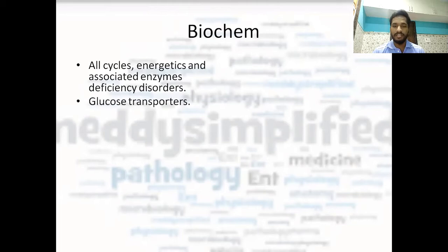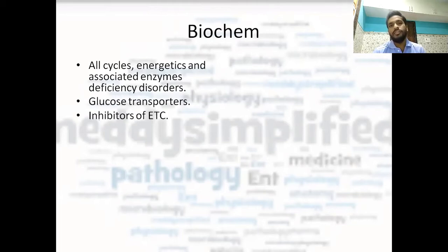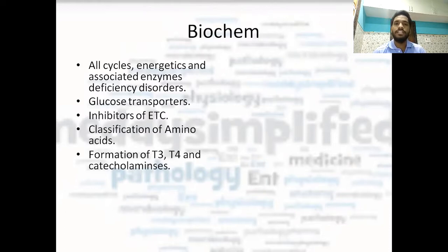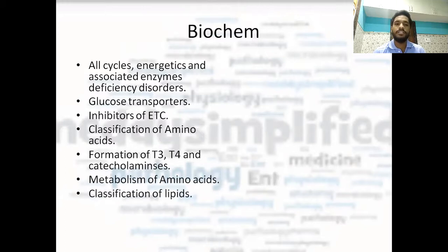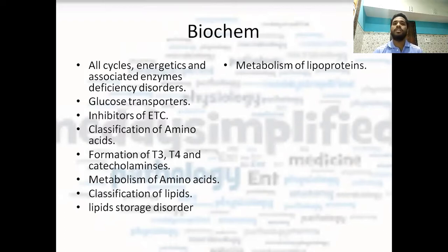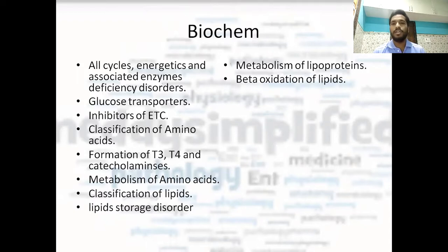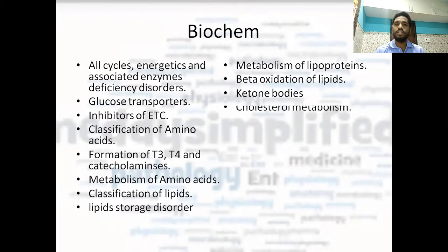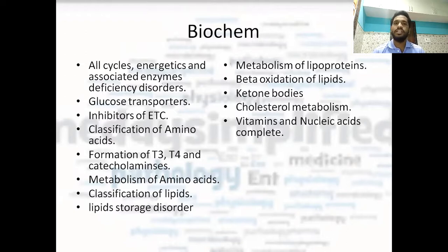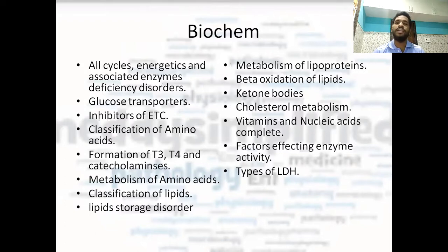Now talking about biochemistry. All the metabolic cycles and their energetics are important. Glucose transporters, inhibitors of the electron transport chain, classification of amino acids, formation of T3, T4 and catecholamines, metabolism of amino acids, classification of lipids and related disorders — lipid storage disorders, Gaucher's disease, Niemann-Pick disorder, etc. Metabolism of lipoproteins: VLDL, LDL, HDL — they each have a metabolic pathway, so that is very important. Beta oxidation of lipids — if you cannot do the whole lipid metabolism, at least do beta oxidation. And ketone bodies, cholesterol metabolism, vitamins and nucleic acids completely — from vitamins you can get 2 to 4 questions, combined with biochemistry it gives 2 to 4 questions every year. And factors affecting enzyme activity, enzyme classification, and types of LDH — there are 5 types located in different organs — all are important.